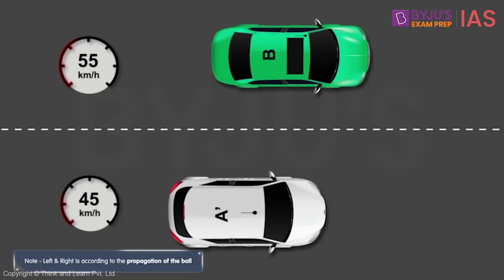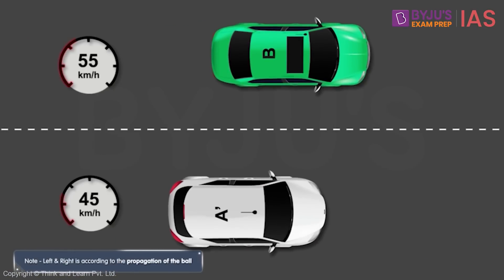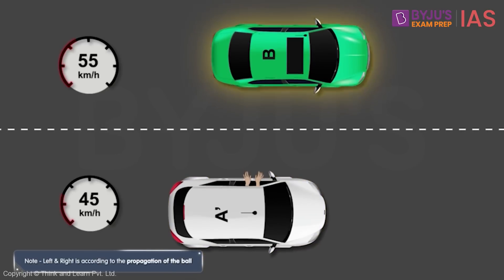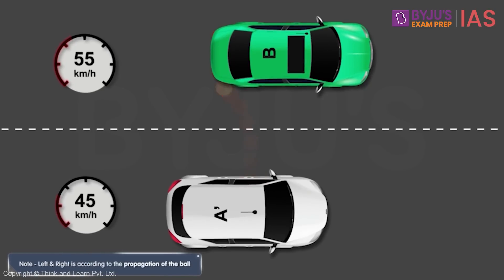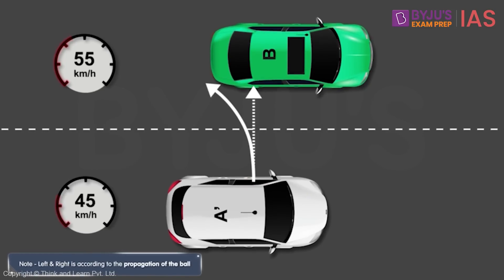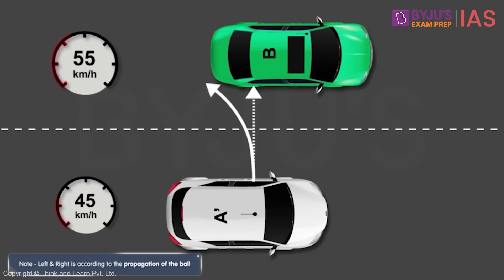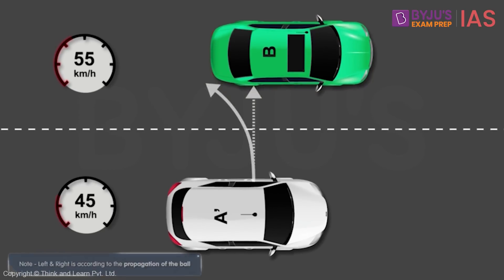And in the fourth case, if the ball is thrown by your friend in car A dash to you in car B, then it will again appear to land to the left of you. But this time, it's because you are moving faster than your friend and you have moved ahead of the ball.